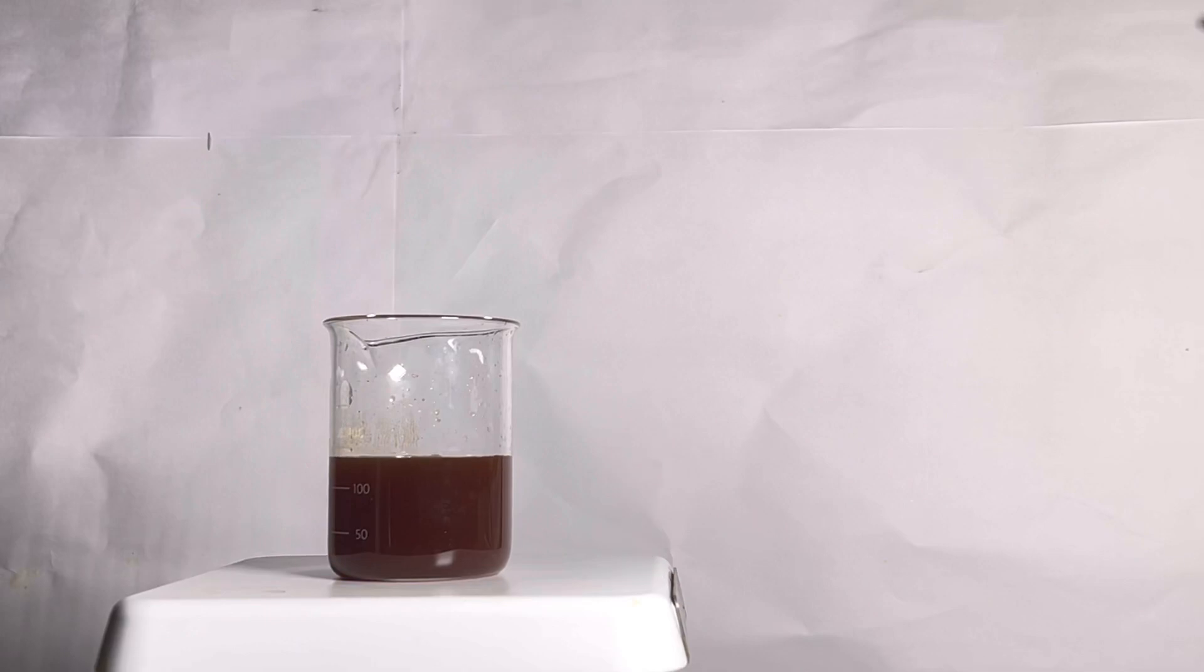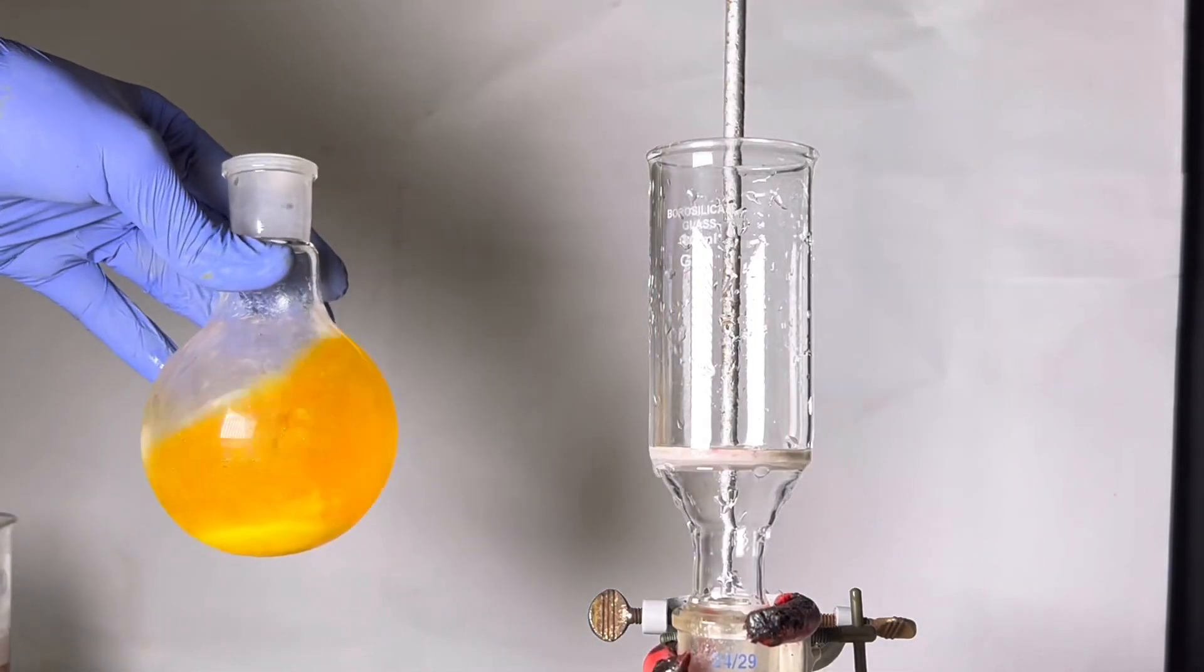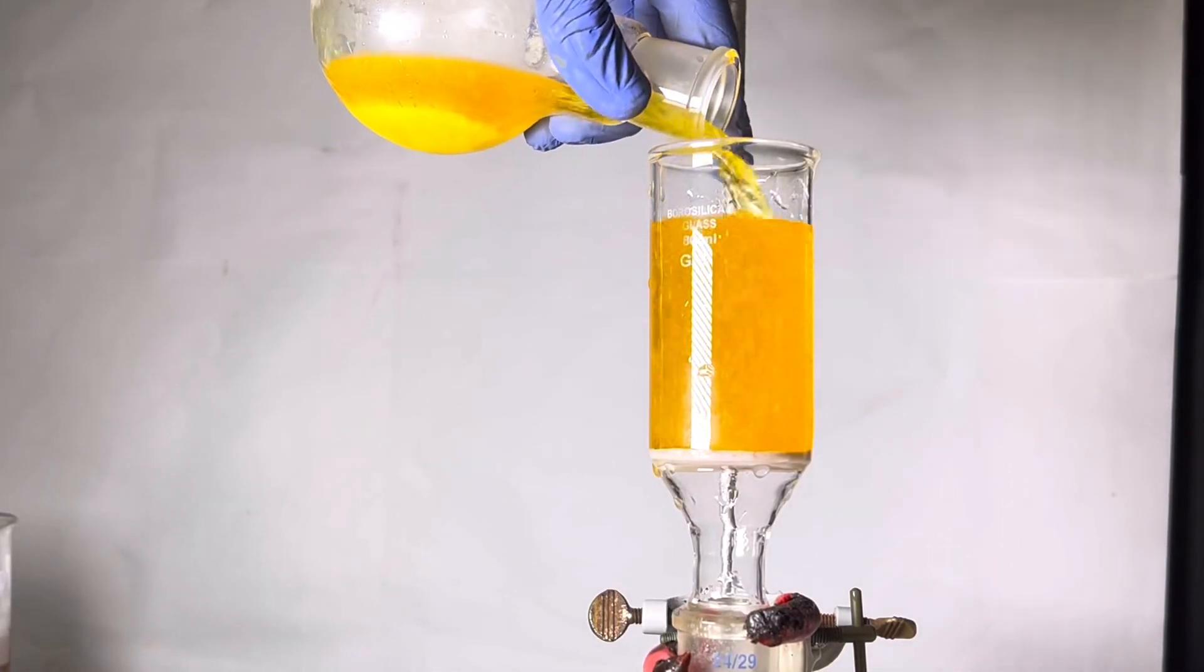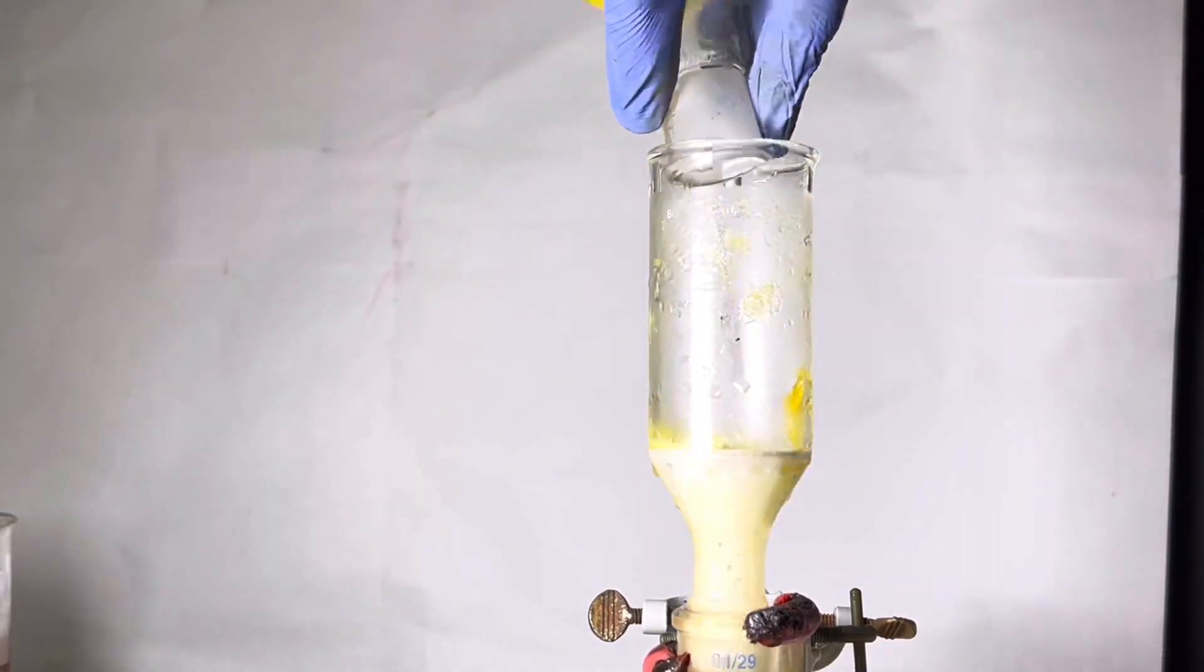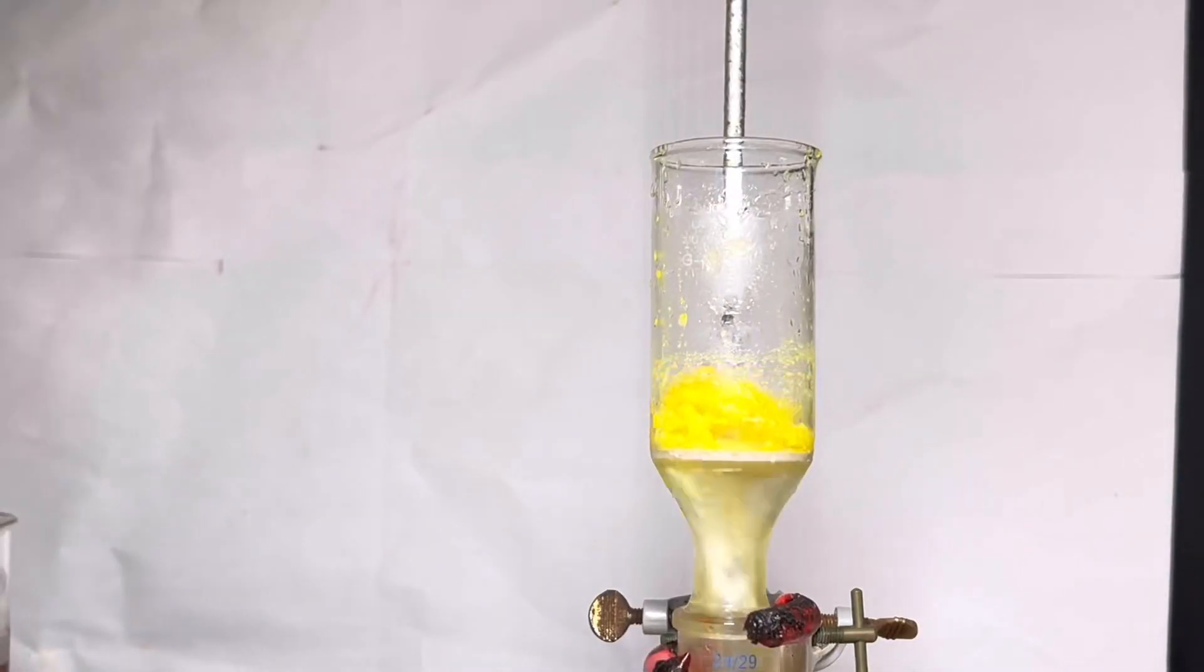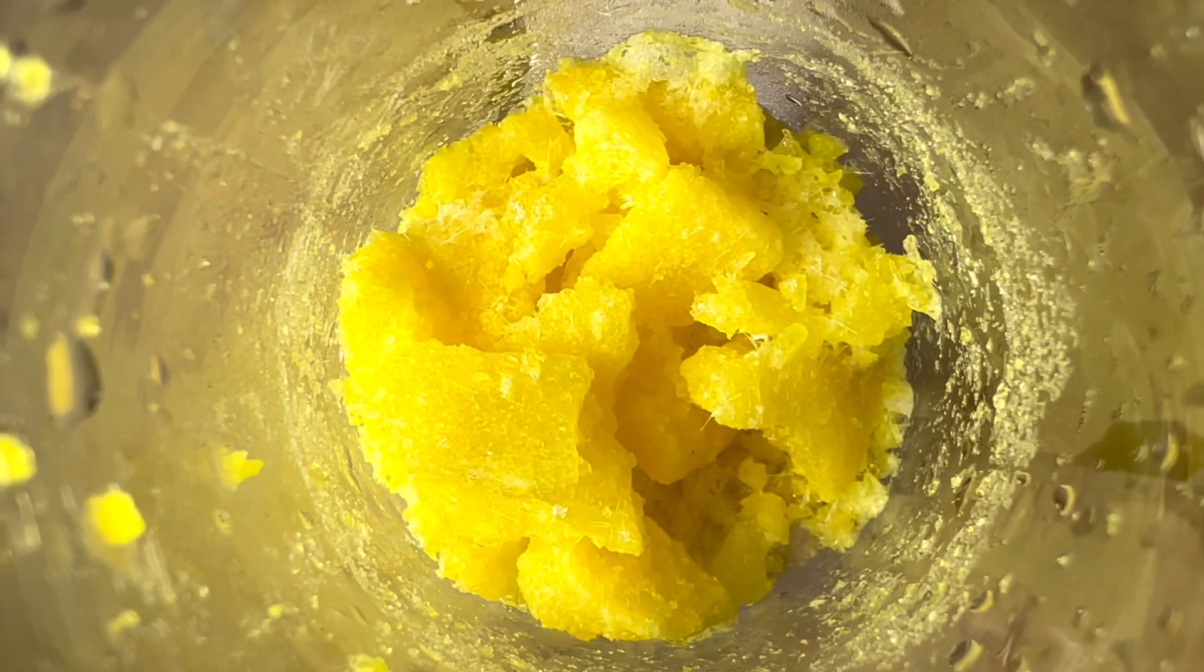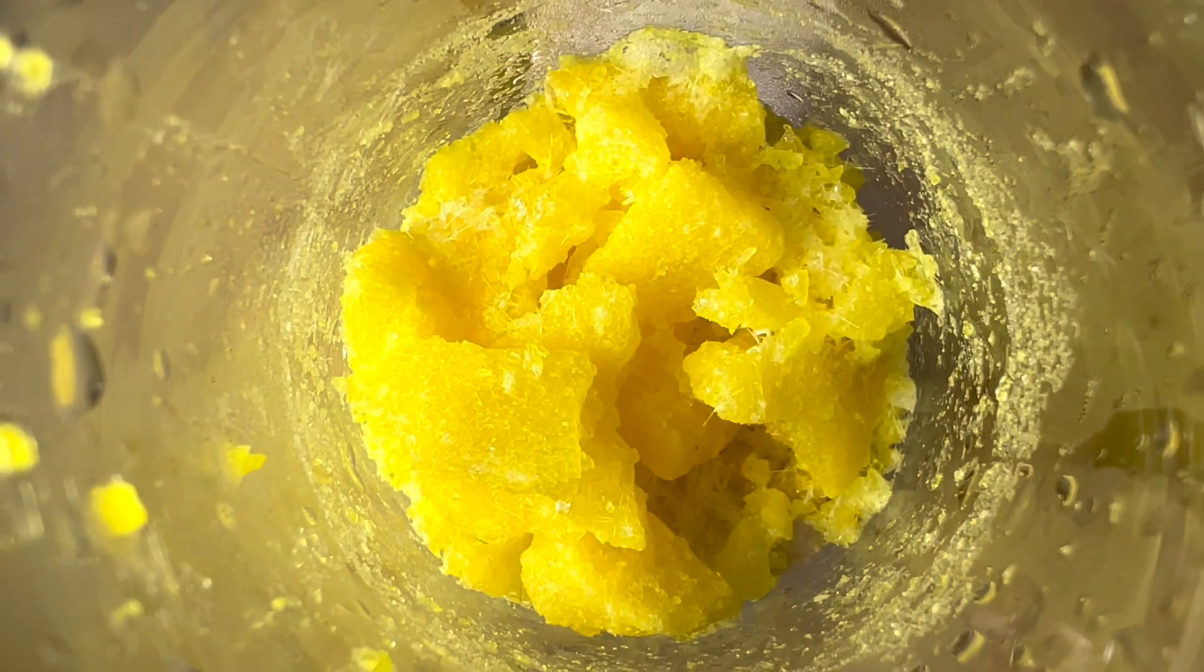The next day, both the beaker and the flask have crystals in them. First, I filter the ortho-nitrophenol. It has some nice yellow crystals. The flask was washed with a little bit of cold water to transfer everything to the Buchner funnel. This is the ortho-nitrophenol that I obtained. It was then transferred to a vacuum desiccator to dry.